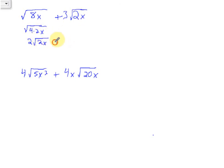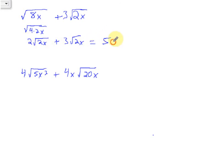Now we've got like terms. We have 2 square root of 2x plus 3 square root of 2x. Now that I've got my like terms, I can combine those like terms to get 5 times the square root of 2x, and that is as simple as we can get.